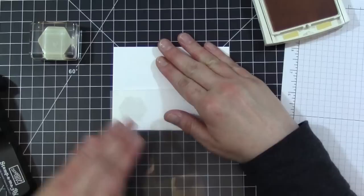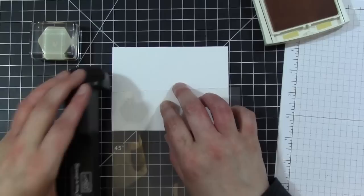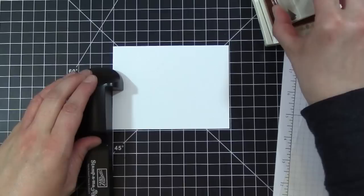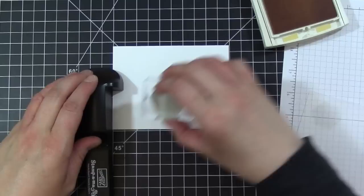I'm lining it up on my grid mat just so I can make sure that my image is straight. I'm going to slide that out of the way. I'm going to ink up my stamp and I'm using So Saffron for my ink color.